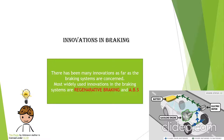The braking system is a huge arena for study, and with the advent of new technologies, there have been many breakthrough innovations. The two most widely used innovations in braking systems are regenerative braking and ABS — anti-lock braking system. Regenerative braking is an energy recovery mechanism that slows down a moving vehicle by converting its kinetic energy into a form that can be used immediately or stored until needed. In this mechanism, the electric traction motor uses the vehicle's momentum to recover energy that would otherwise be lost to the brake disc as heat. Regenerative braking is particularly extensively used in electric vehicles.